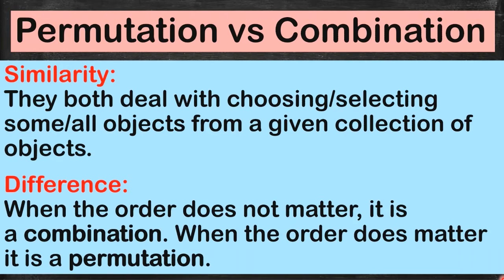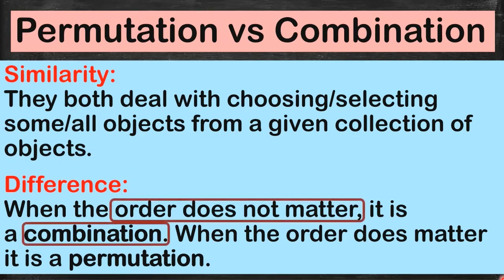So for you to confidently identify the difference between a permutation and a combination, let's have some examples. Remember: if the order does not matter, it is a combination. If the order does matter, it is a permutation.